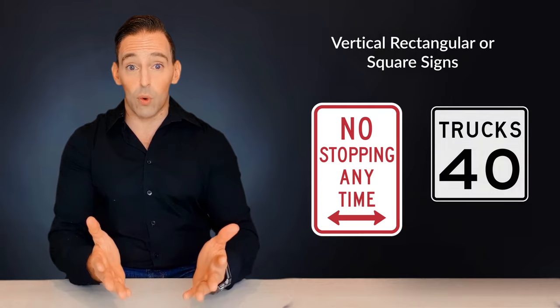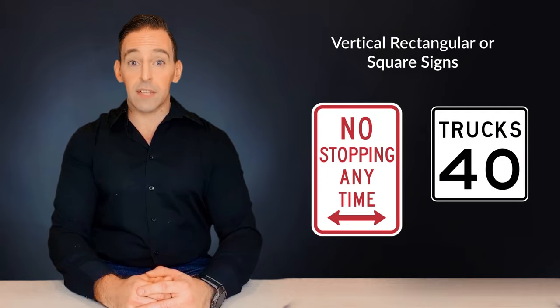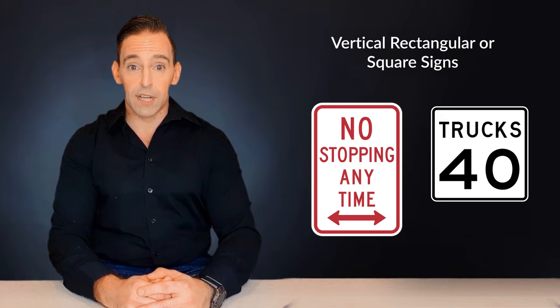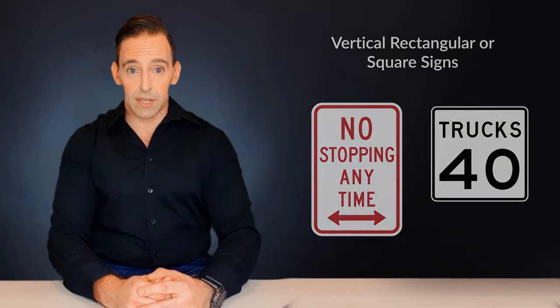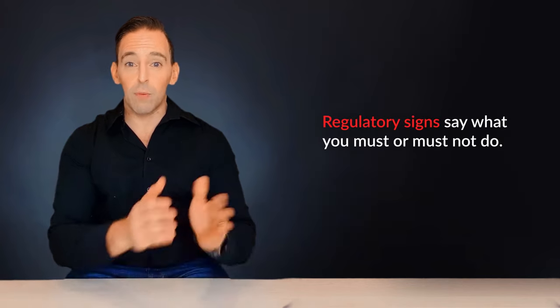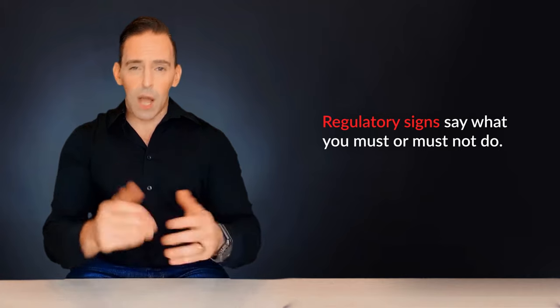Okay, we're almost done. What about vertical rectangles or squares? Rectangular signs, specifically those that are vertical, indicate regulatory signs. Regulatory signs say what you must or must not do. Now we will go through regulatory signs later in the video.